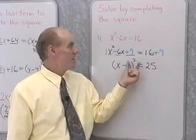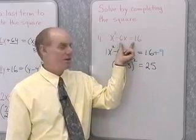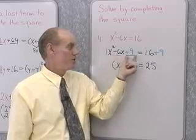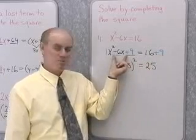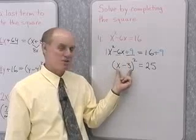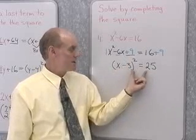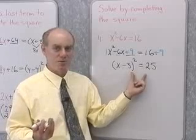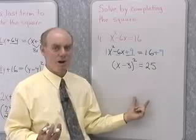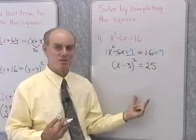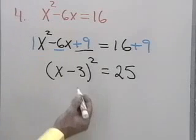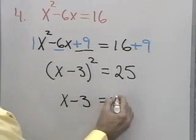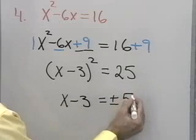So, look what I've done. I've taken this quadratic equation, added the appropriate term to turn the left side into a perfect square trinomial, and done the same thing to the other side. That allows me to write the perfect square trinomial as the square of a binomial. This equation now has the form we solved previously using our theorem to take the square root of both sides. So, if x minus 3 squared is 25, then x minus 3 itself is plus or minus the square root of 25, which is 5.